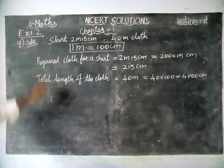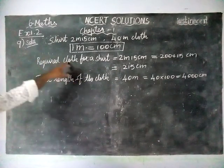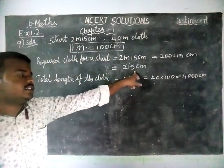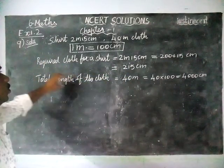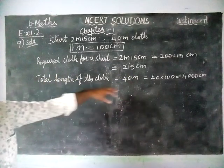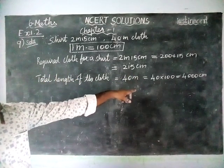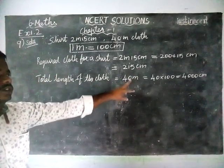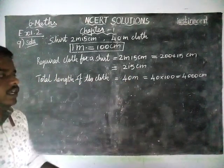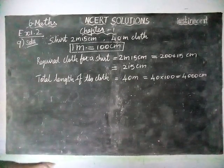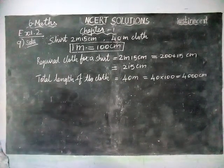So, required cloth for a shirt is equal to 215 centimeter. Total length of the cloth is equal to 4000 centimeter. Both are now in the same unit. Now we are going to find the answer.